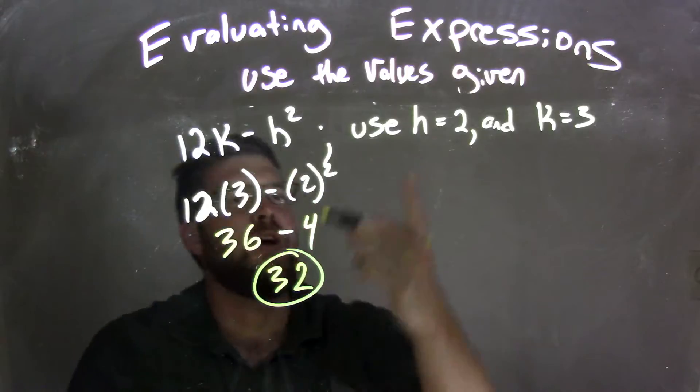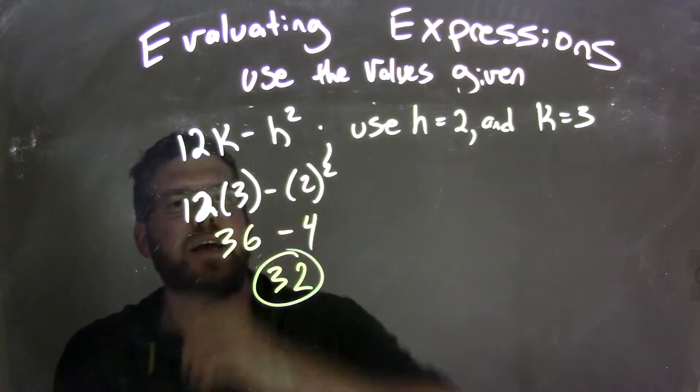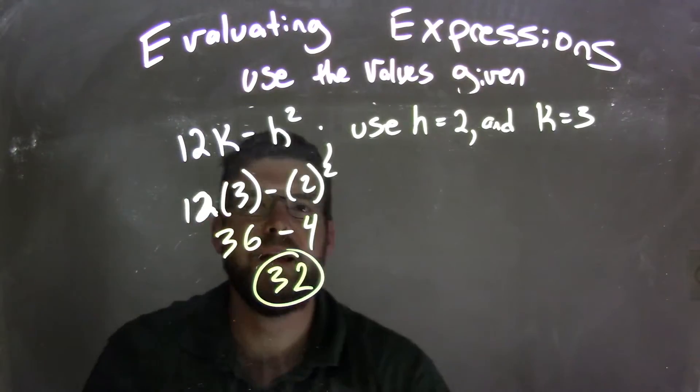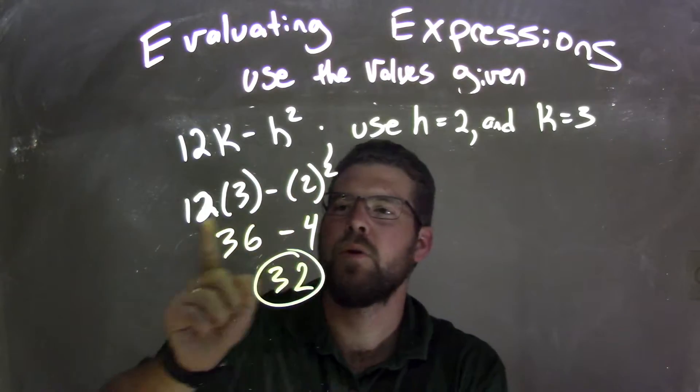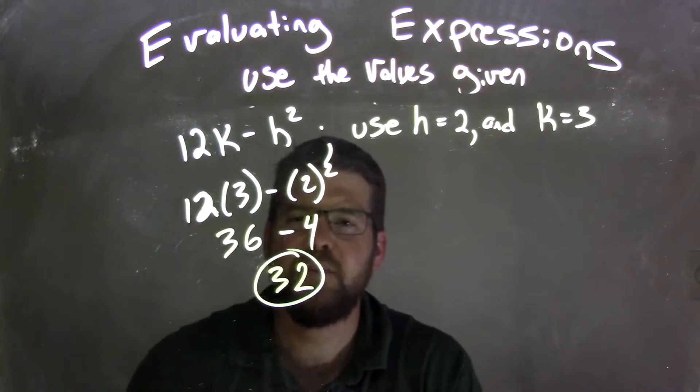So let's recap here. We substituted 2 and 3 for h and k respectively, into h and k here, k being 3, 2 being h. And then 2 squared was 4, and 12 times 3 is 36. Now we subtract them, 36 minus 4 is 32.